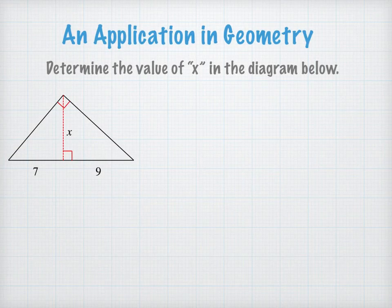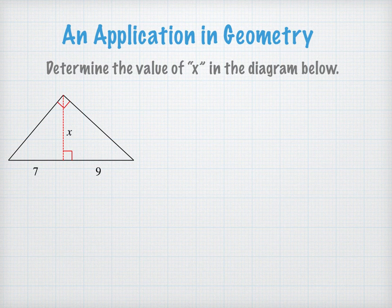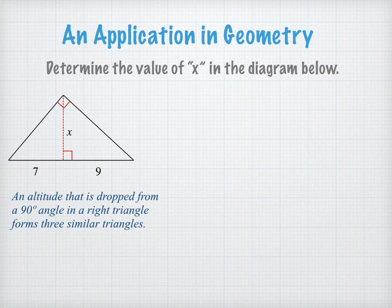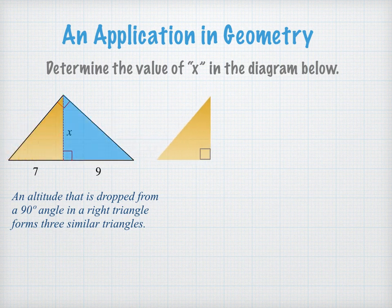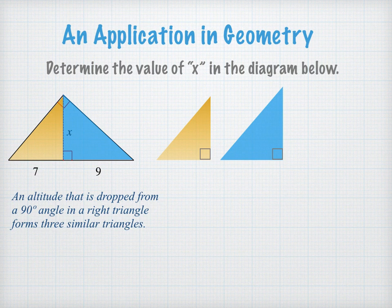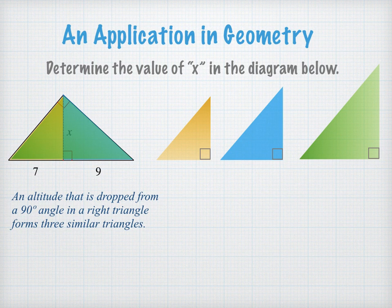Now let's look at an example in geometry to see how the geometric mean applies in right triangles. The directions say find the value of x in the diagram below. Notice that the diagram shows an altitude of a right triangle. It turns out that when an altitude is dropped from a 90-degree angle in a right triangle, three similar right triangles are formed. I'll show you those using color coding — we have a yellow one, a blue one which you can imagine rotating 90 degrees counterclockwise, and then the big outer right triangle.